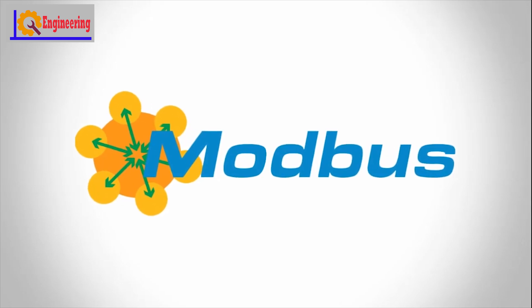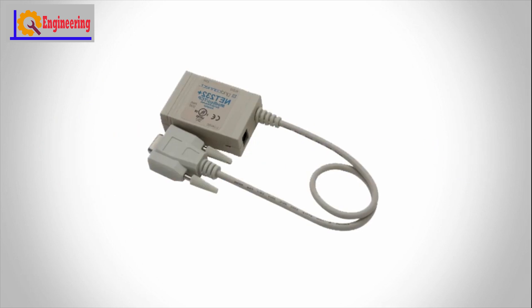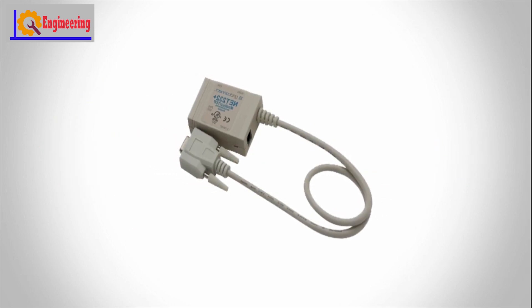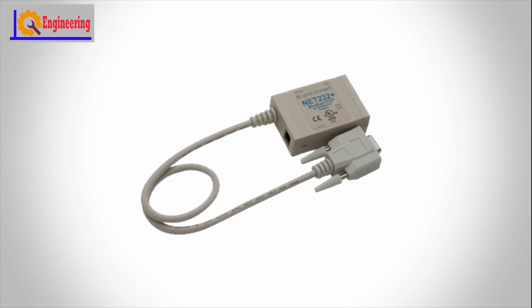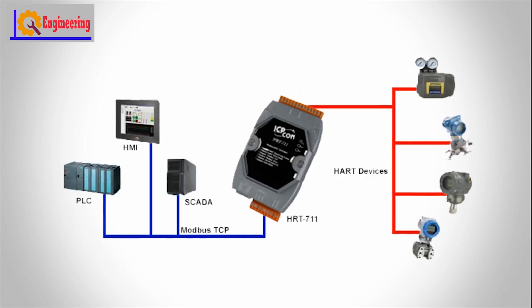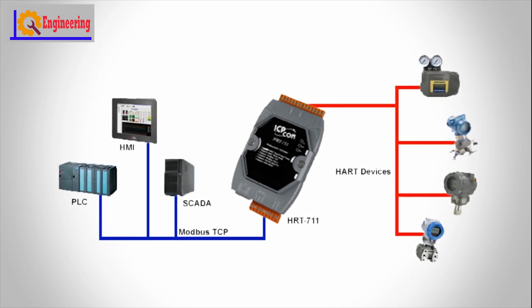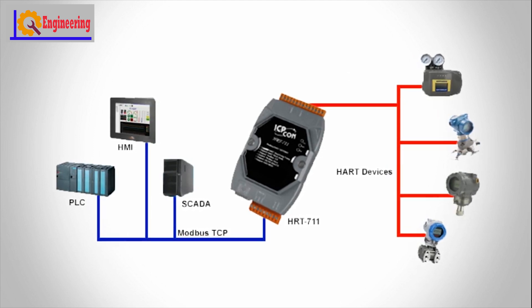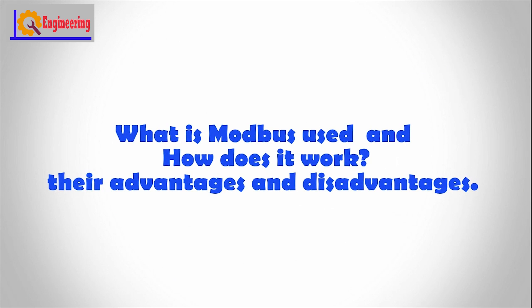Modbus is a serial communications protocol firstly published by Modicon, at present Schneider Electric, in 1979 for use with its programmable logic controllers (PLCs). Simple and robust, it has since become a de facto standard communication protocol, and it is now a normally available means of connecting industrial electronic devices. In this video, we will learn what Modbus is used for and how does it work, along with its advantages and disadvantages.